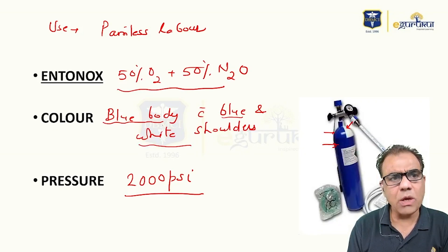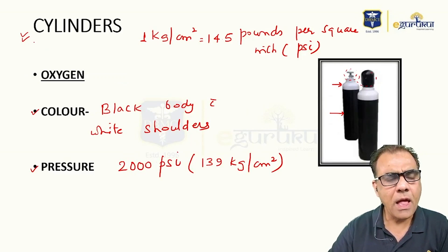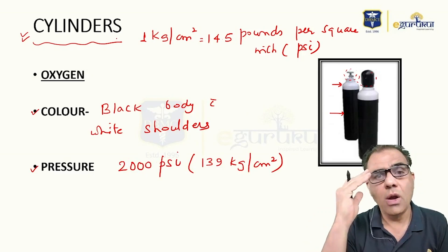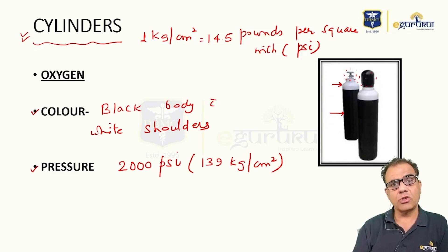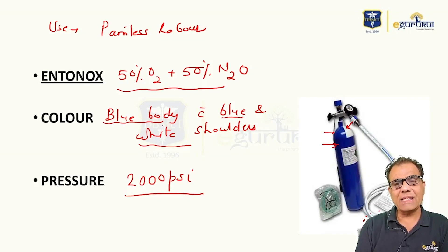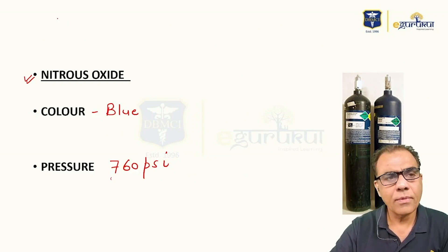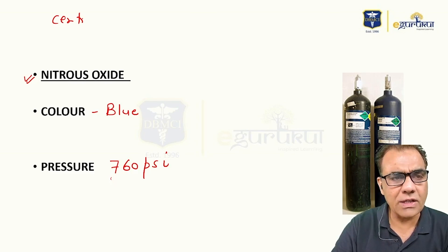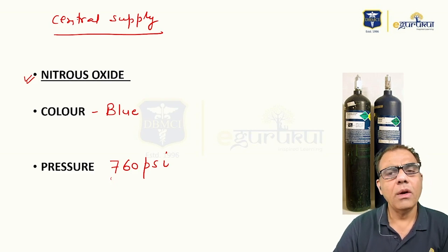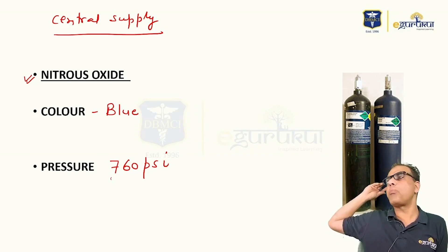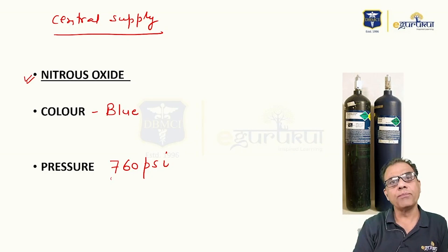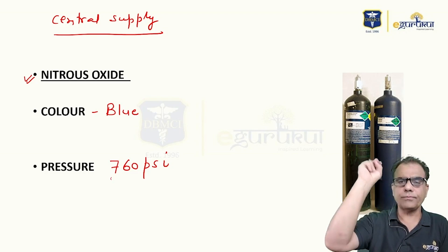Cylinders are one source, but in larger hospitals where gas consumption is more and it is not possible to change cylinders every time, gases are supplied through central supply. There is a central supply room with big cylinders, and through pipes these gases are delivered to the operation theater.